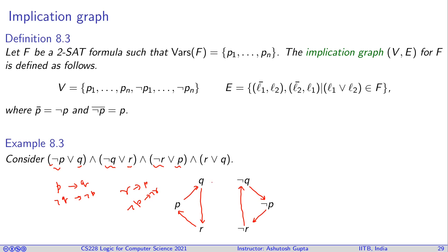The clause R or Q means ¬R implies Q, so we draw ¬R→Q. Similarly, ¬Q implies R, so we draw ¬Q→R.